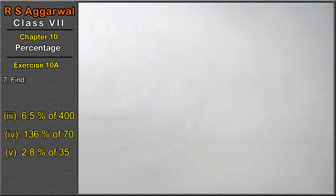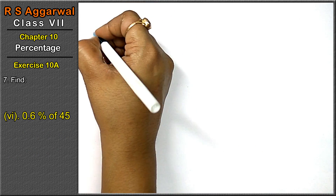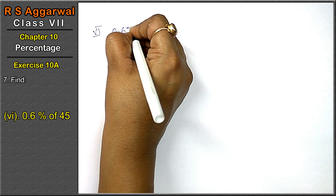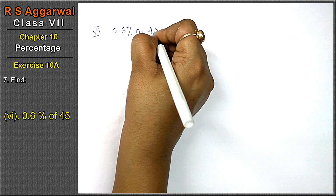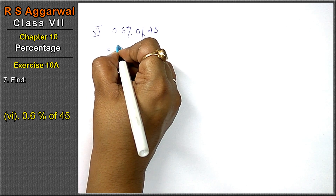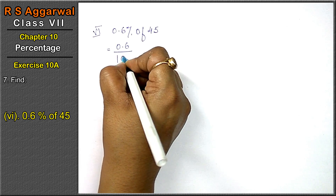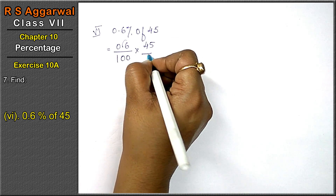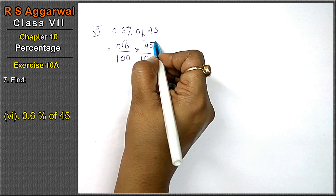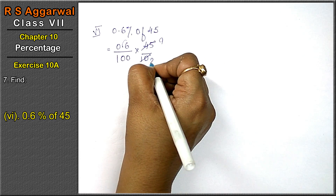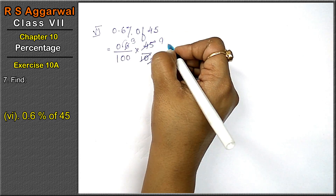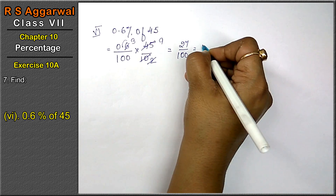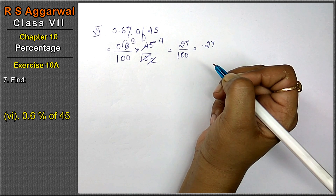Let's do the last part, the 6th part. 6th part is 0.6 percent of 45. That means 0.6 upon 100 into 45. We remove the decimal point and multiply by 10 below. 9×5 is 45, ×2 is 10, 2×1 is 2, 2×3 is 6. The answer is 27 upon 100. Converting to decimals, 0.27 will be the answer.